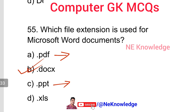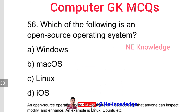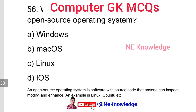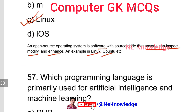Question number 56: Which of the following is an open source operating system? The correct answer is Linux — option number C. An open source operating system is software whose source code anyone can inspect, modify, and enhance. An example is Linux and Ubuntu.